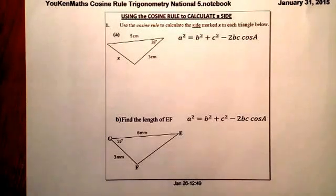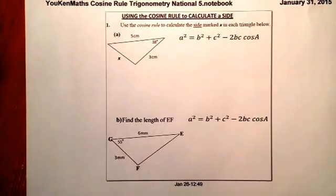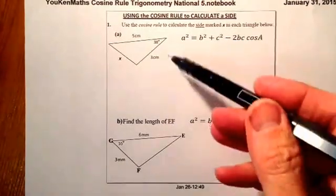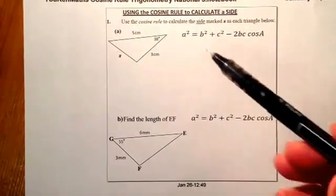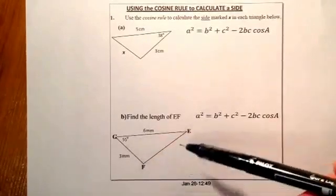Here we're looking at the basics of using the cosine rule to calculate a side. So I've got two examples that we're going to go through, one that's not labelled up and another triangle that is labelled.